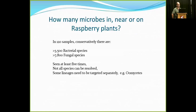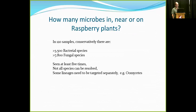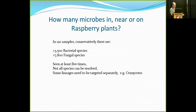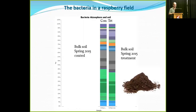How many microbes are there on or near a raspberry plant? Combining our 120 samples, I can conservatively say there are at least 3,500 bacterial species and 7,800 fungal species. I say conservatively because we sequenced about 20 million pieces of DNA and required seeing the same species at least five times before confirming it. Also, not all species can be resolved — sometimes too closely related species can't be told apart, so they get grouped, like Bacillus and Bacillus firma just becoming 'Bacillus.' Some lineages like Oomycetes also need to be targeted separately.